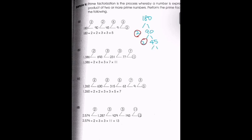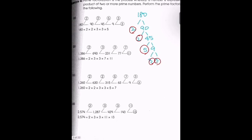45 can be expressed as 5 times 9. Five is a prime number, so we circle it. Nine can be expressed as 3 times 3. So the prime factorization of 180 is 2 times 2 times 3 times 3 times 5, which is 2 to the power of 2 times 3 to the power of 2 times 5.